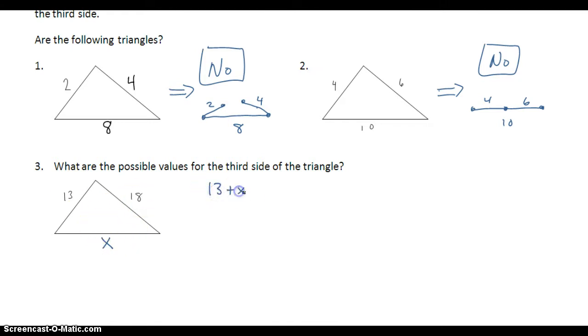So 13 plus x has to be greater than 18. And 18 plus x has to be greater than 13. These two together have to be greater than this. And finally, these two together, 13 and 18, have to be greater than x. Since we don't know if x is the biggest or the smallest side of this triangle, we have to set up three different inequalities and solve for x in each inequality.